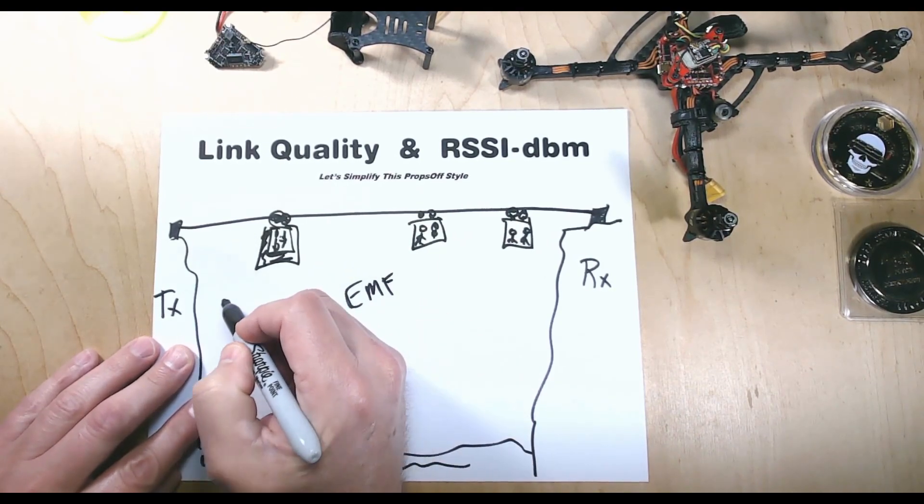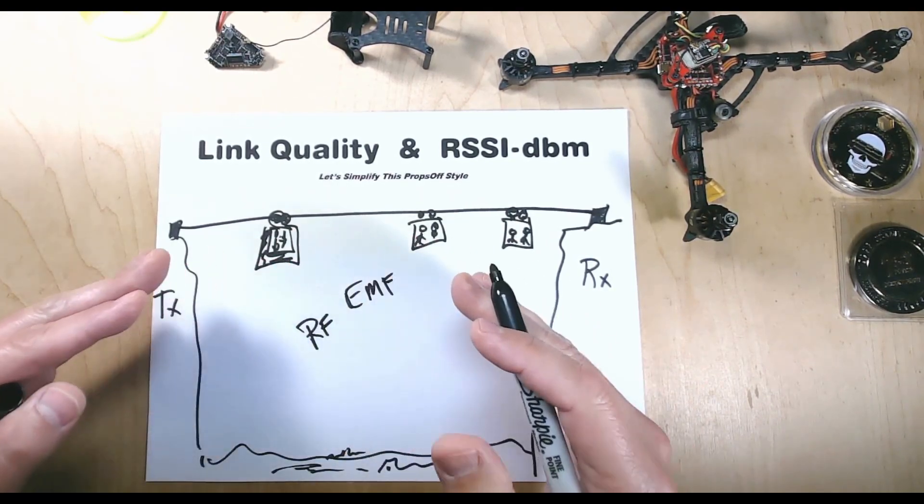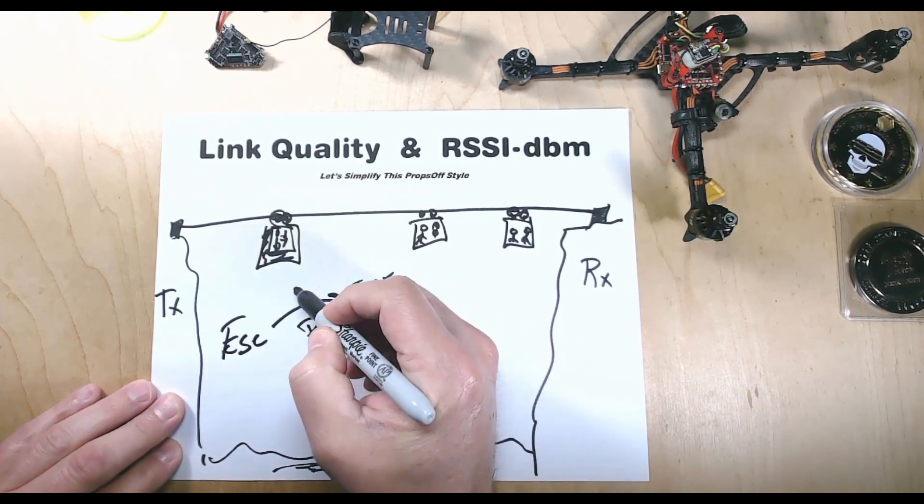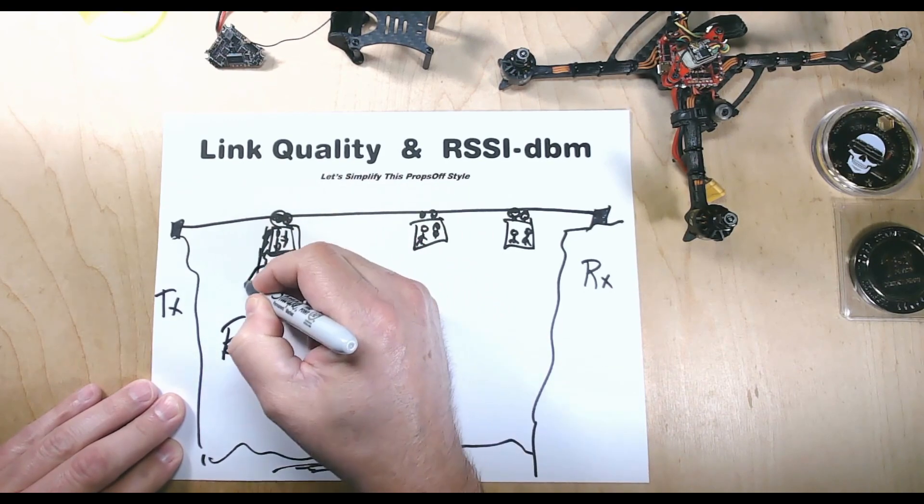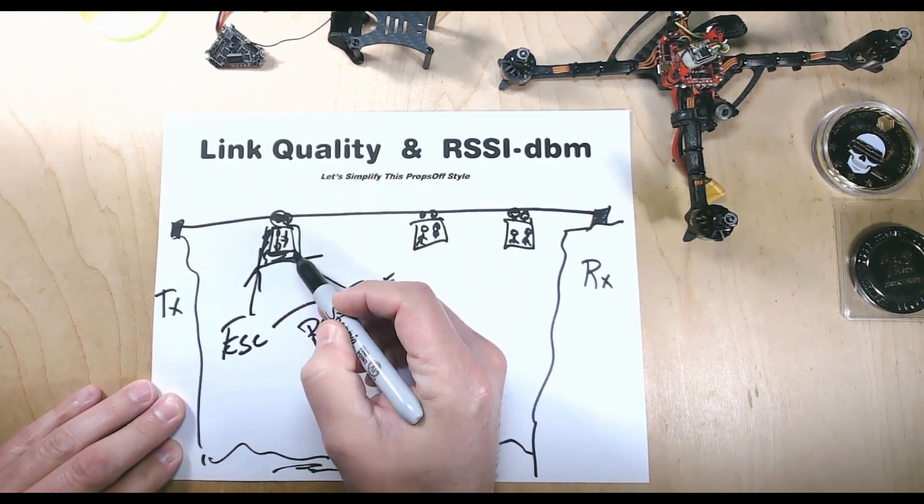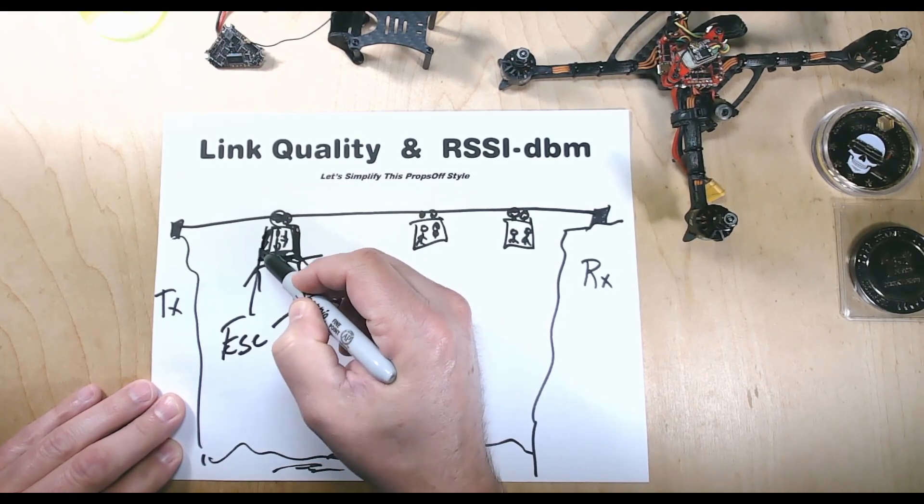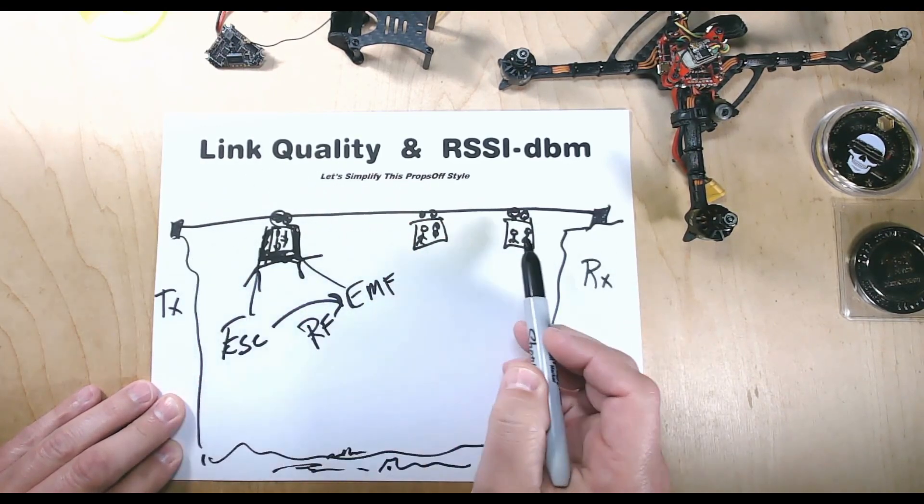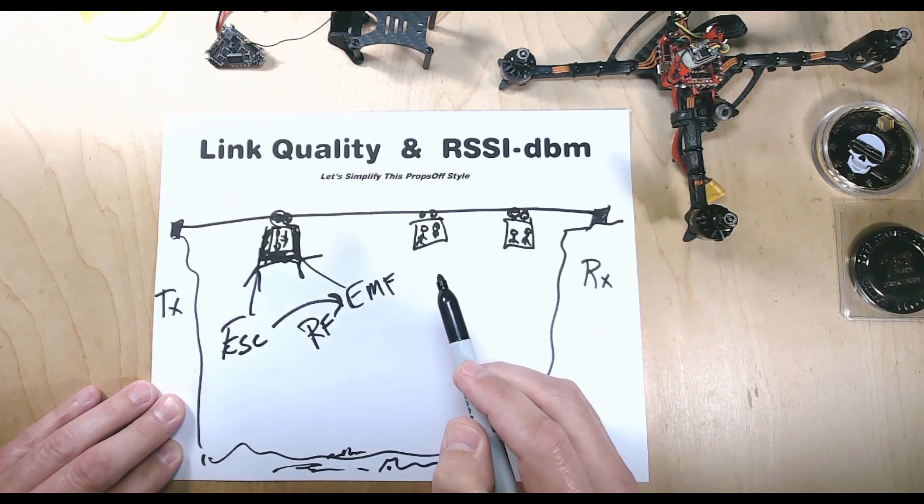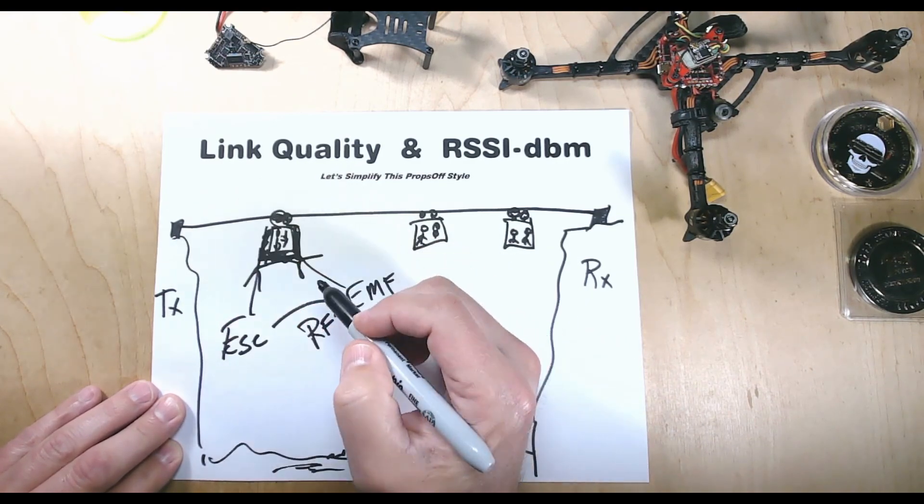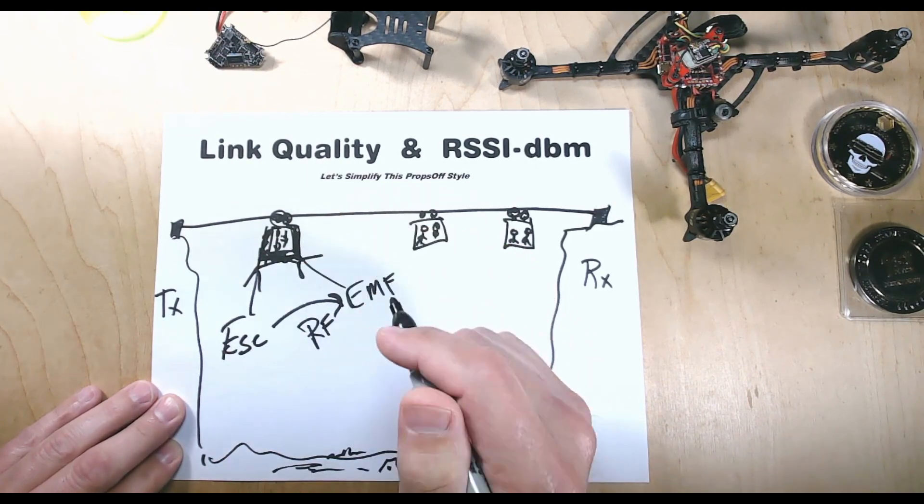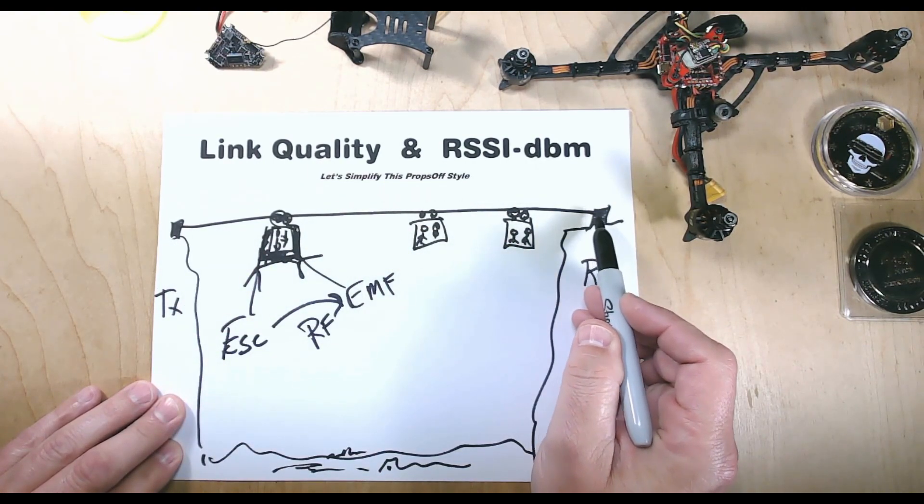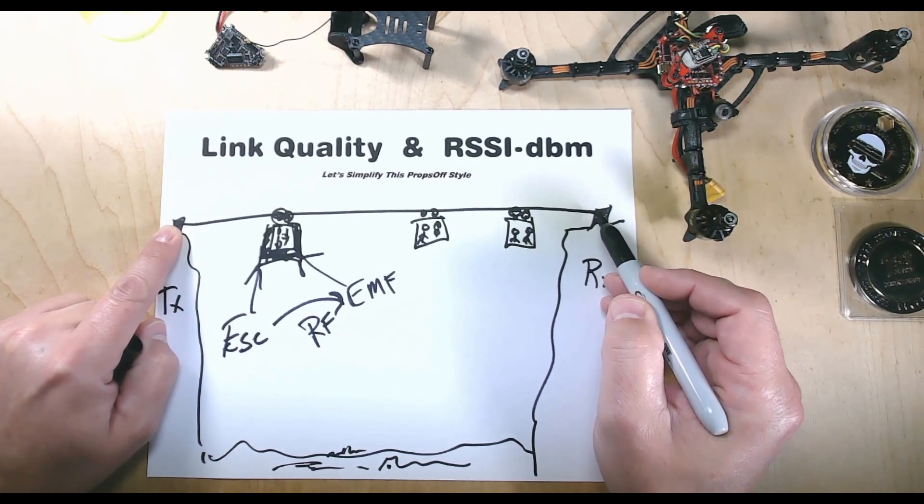If we have good strong carriages or good Link Quality, we can make sure that we get all of these packets back and forth without losing any. If the Link Quality goes down, the errors rise up, and then we need to make sure our RSSI-dbm is strong between these two points.